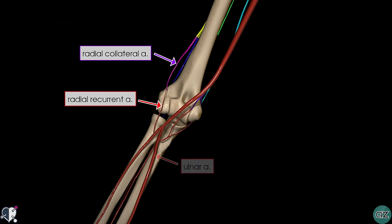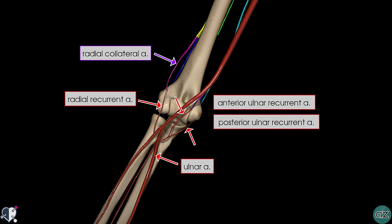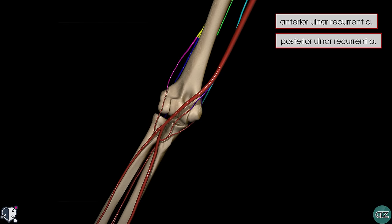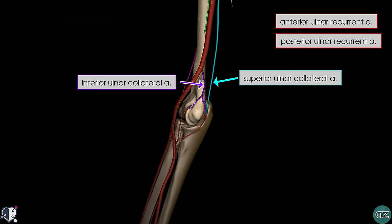The ulnar artery passes along the medial aspect of the forearm. Proximally, it gives off the ulnar recurrent arteries. A recurrent artery is simply an artery which reflects back in the opposite direction of its parent artery. There are two ulnar recurrent arteries, anterior and posterior. In this model they're seen originating from a common trunk, but often they will arise directly from the proximal ulnar artery. We can see how the superior and inferior ulnar collateral arteries, arising from the brachial artery, anastomose with the ulnar recurrent arteries.